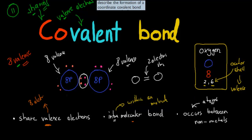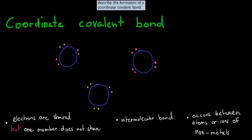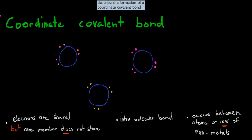Now I'm going to talk about the actual coordinate covalent bond, because the dot point says to describe the formation of a coordinate covalent bond. This here is going to be ozone — O3 — as opposed to what I just drew earlier, which was O2, just normal molecular oxygen gas.